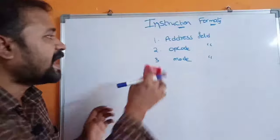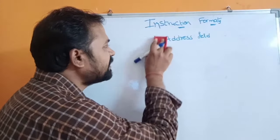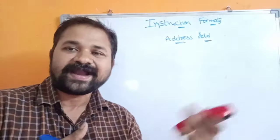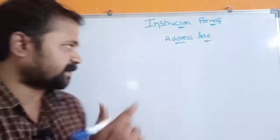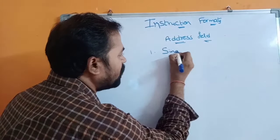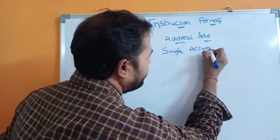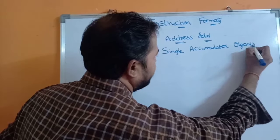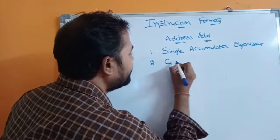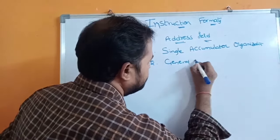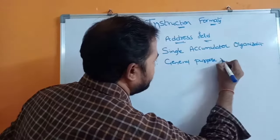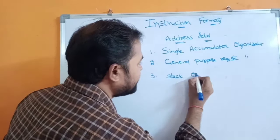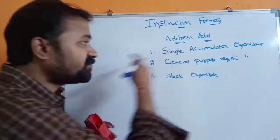In this video our major focus is on the address field. Based upon the number of addresses, there are three types of organizations. The first one is single accumulator organization. The second one is general purpose register organization.